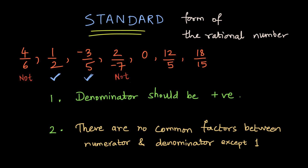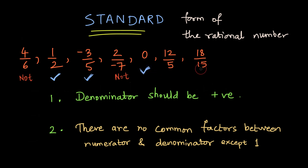For 0, it can be written as 0 by 1. We do not write divided by 1 since this is a whole number, and we can assume the denominator is positive. There is no common factor between 0 and 1 other than 1, so 0 is also in the standard form. For 12 by 5, since 5 is positive and there are no common factors between 12 and 5, this is also in the standard form.